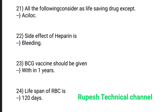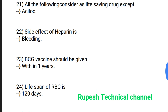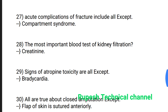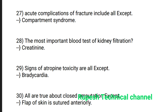Question number 24: Life span of RBC is 120 days. Question number 25: Which person is at greater risk of developing pernicious anemia? A total gastrectomy patient. Question number 26: The aim of chest tube drainage is to facilitate drainage.